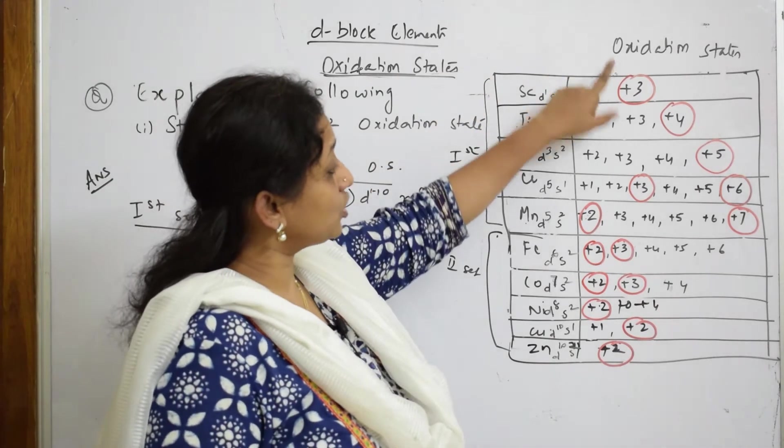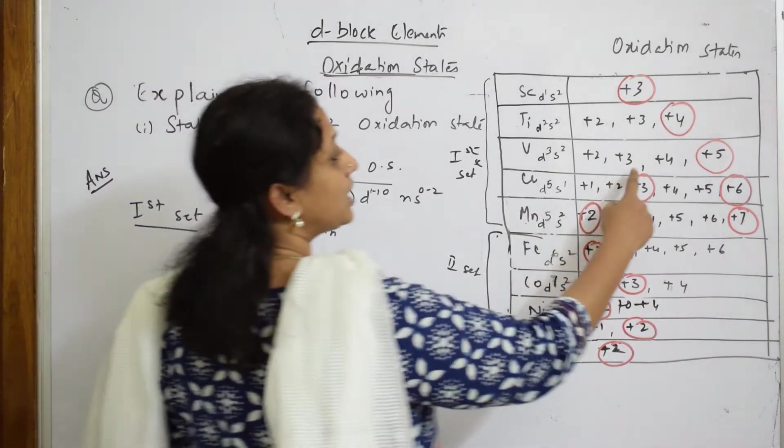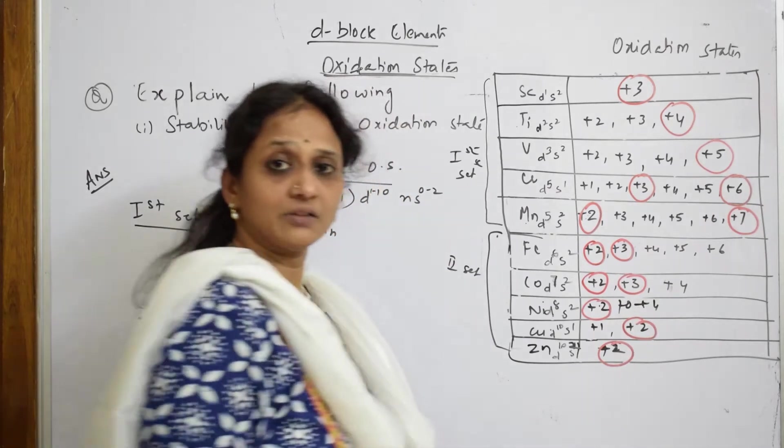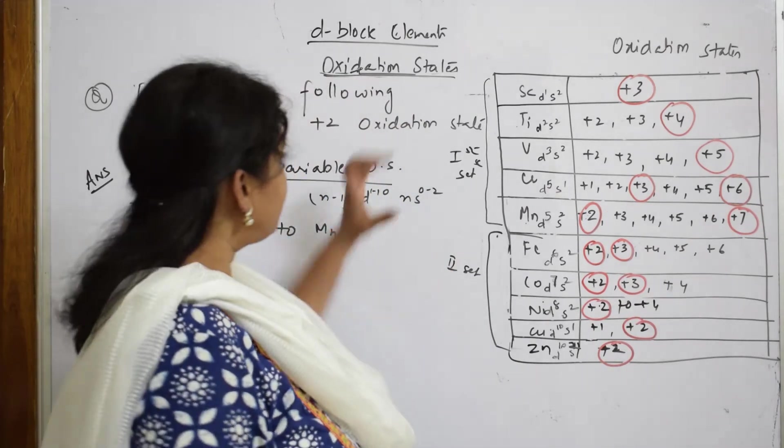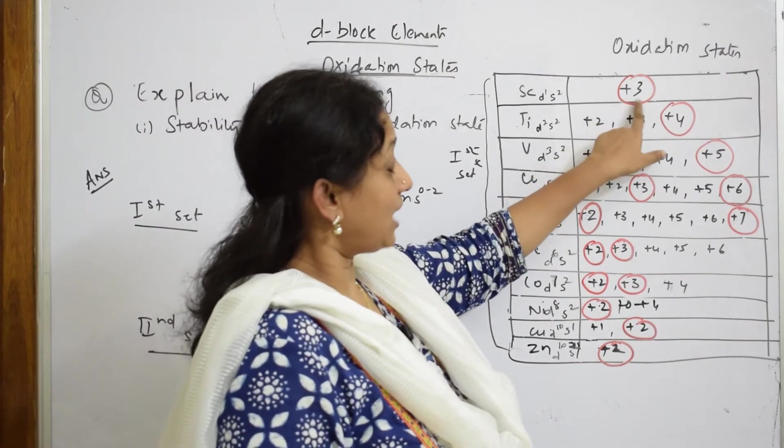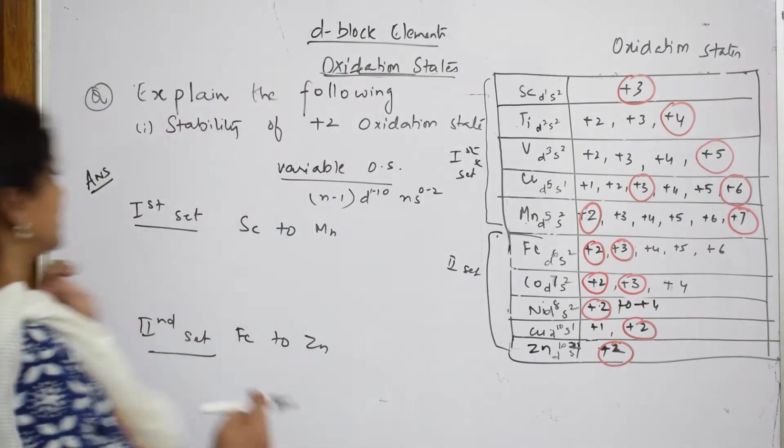What are you observing from the first set? You're able to observe higher oxidation states. I have marked all these as stable oxidation states, very stable oxidation state. So what am I trying to explain? In the first set of series, compared to +2, the higher oxidation states are more observed.